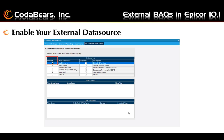Before you can use your external data sources for business activity queries and dashboards, you must enable your external data source in company maintenance. Once in company maintenance, move to the tab that says BAQ external data sources — a simple check or uncheck here enables or disables the data source after you save your changes. You can also choose to skip security checking for the data source if you had any filter groups or filter definitions. Click the save button to keep your changes.